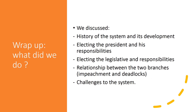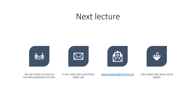To wrap up this lecture: we discussed the history of the presidential system and its development, the election of the president and his responsibilities, the election of the legislative body and their responsibilities, the main junctures of the relationship between the two branches in terms of impeachment and deadlocks, and finally the challenges to the system. For the next lecture, we're going to discuss the parliamentary system and the differences between the parliamentary and presidential systems.